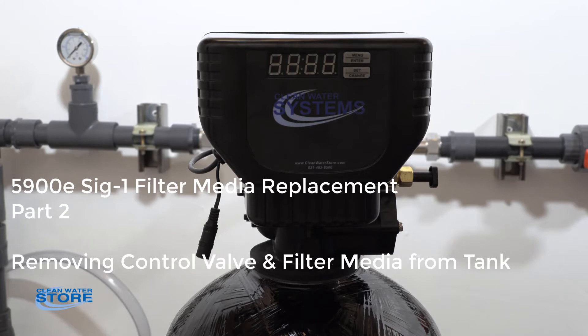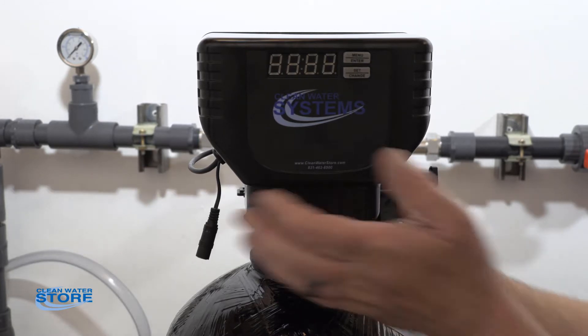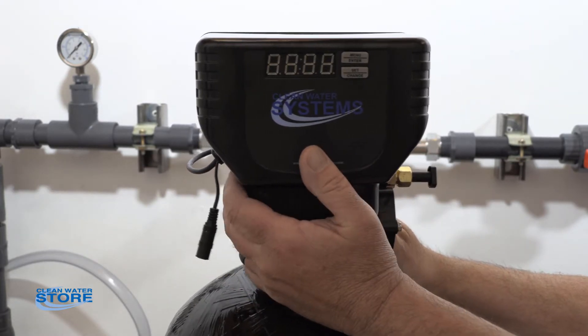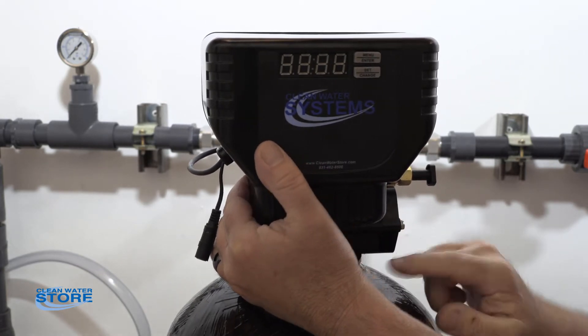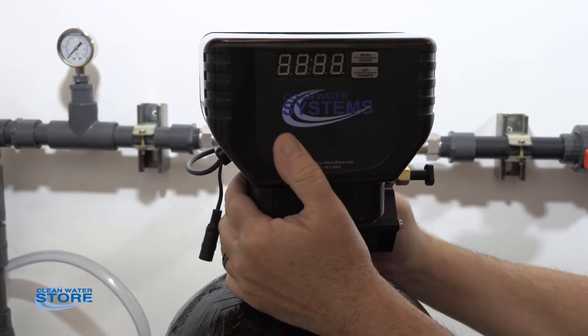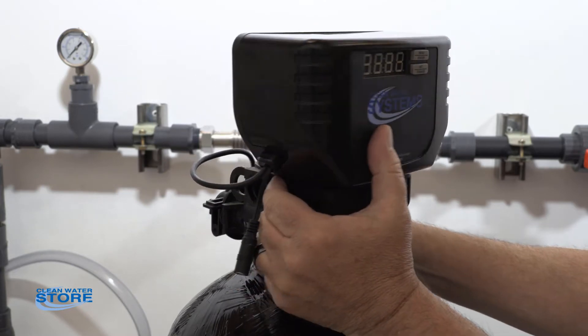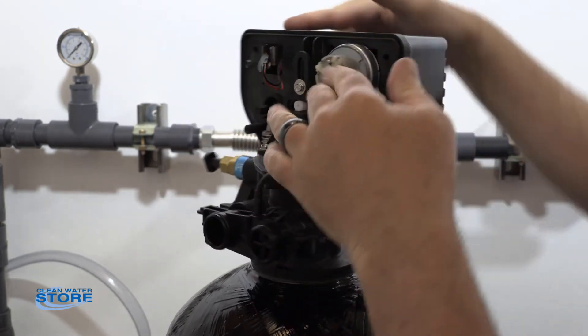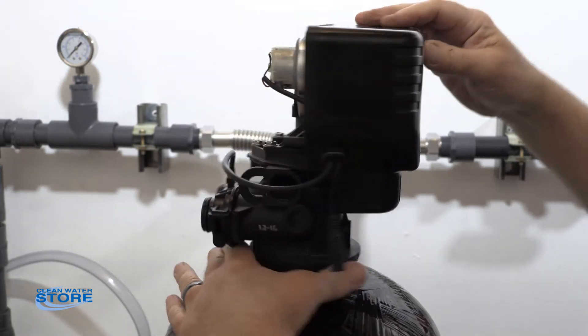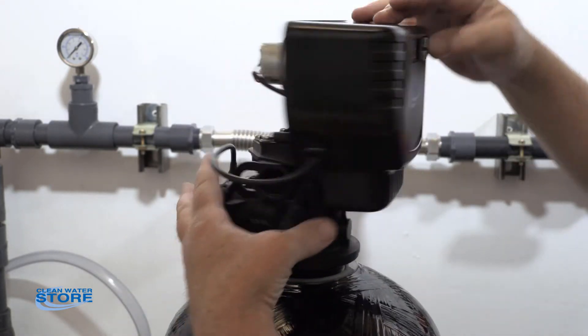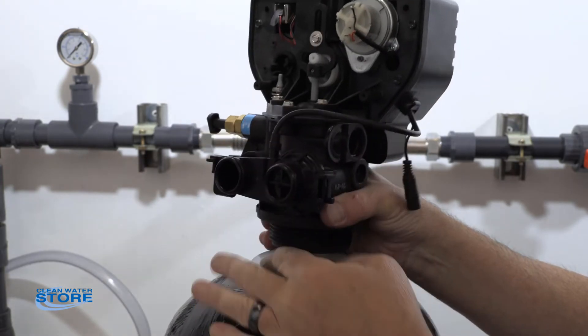Okay, we're going to now go ahead and remove the control valve from the media cylinder. Basically this should be hand tight. You never want to use a strap wrench or anything on here because you can crack the plastic housing or the tank. You're going to just go ahead and unthread this valve.